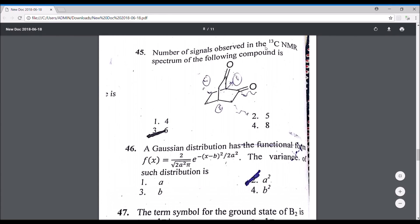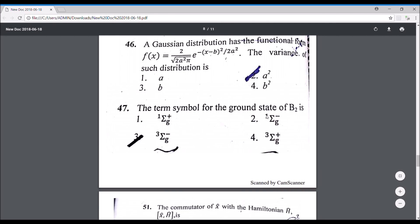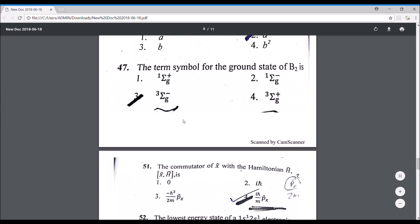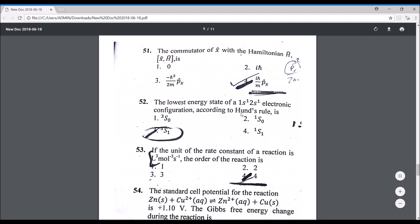Number of signals observed in 13C NMR, the correct answer is 6. This is a Gaussian distribution function given to us, and this is the physical part that is starting. The variance of such distribution is: variance is basically this a squared, so it's 2/σ². This a² is the variance. If they had asked for standard deviation, then it would be the root of a², that would have been a. But since they are asking for variance, it's a². The term symbol for ground state B2, this is molecular term symbols, this is the correct answer, option number three. Commutator of x and Hamiltonian, the commutator is iℏ/m × px. The lowest energy state of 1s1 2s1 electronic configuration is 3s1, option number three.